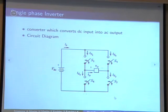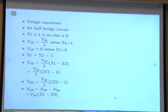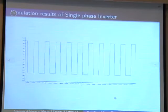Next one is single phase inverter. Here, this DC input is converted to the AC output. This is the inverter, and we get the pulse width modulated output. This is what the output we get.